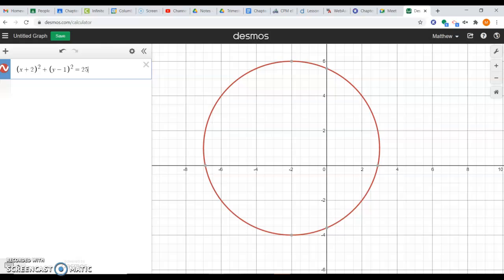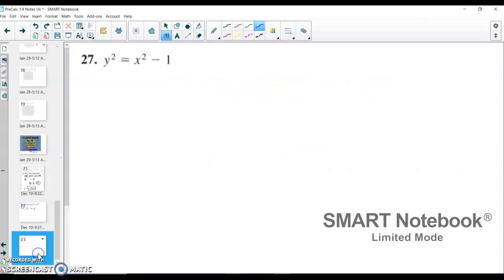All right, let's take a look then at 27. And we have here y² = x² - 1, square rooting both sides here. We end up with y = ± and that's where we're going to have our issues, plus or minus √(x² - 1). Okay, the plus or minus is where this is going to get issues.